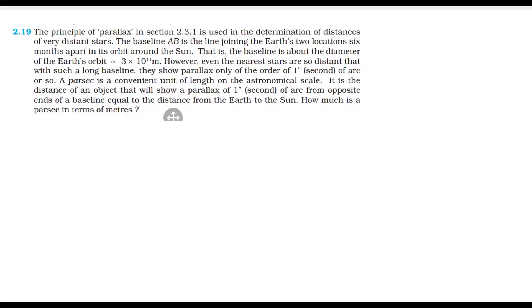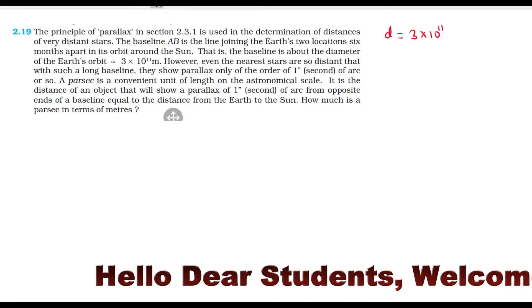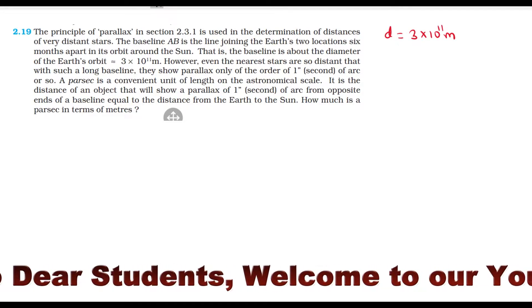The baseline AB is the line joining Earth's two locations six months apart in its orbit around the Sun. That is, the baseline is about the diameter of Earth's orbit, which is equal to 3 × 10^11 meters.